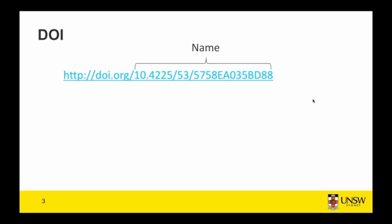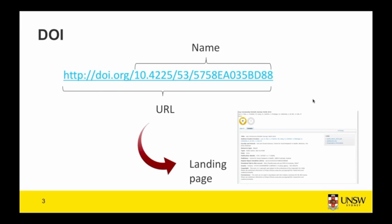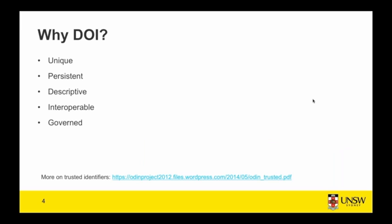There are a few facets to a DOI. The DOI name itself is an alphanumeric string that can be converted to a URL by adding a DOI resolver like DOI.org. When that URL is entered into a browser it takes you to a landing page with human-readable metadata about the resource. So basic information about the resource is required to mint a DOI, and that metadata is both human and machine readable.